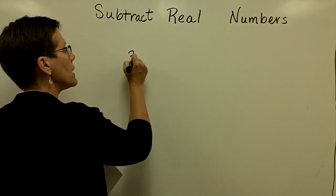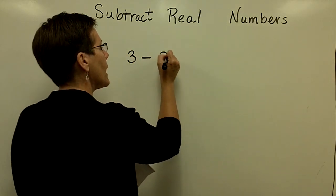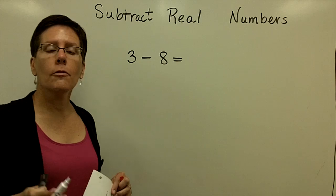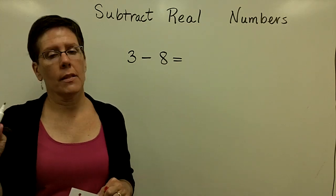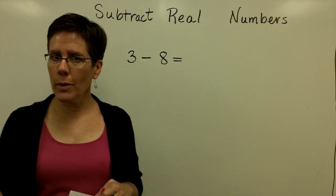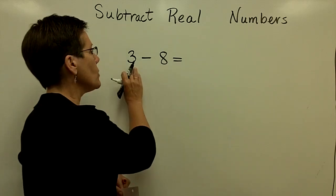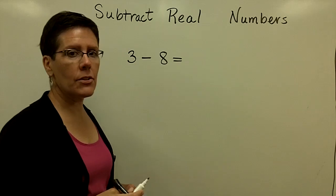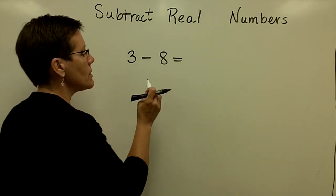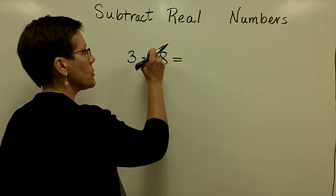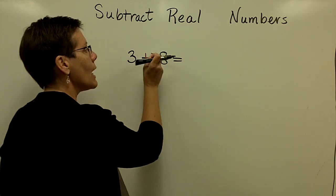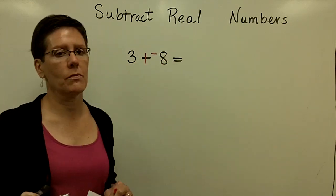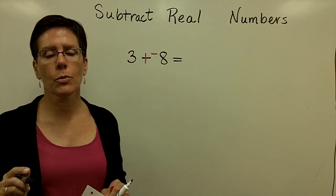So if I have 3 and I want to take away 8, first of all, I imagine that in this problem you might understand that you're going to go into debt. Let's say we were talking about money. Let's say you had $3 and you took away 8. You're going to be $5 in debt. But what we're going to say is that whenever we have a subtraction problem, we add the opposite.